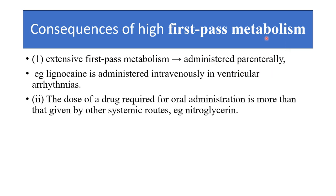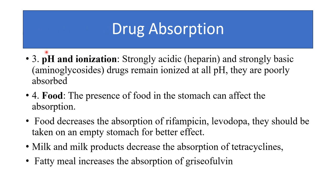Consequences of extensive first-pass metabolism: such drugs should be administered parenterally. Lignocaine is administered intravenously in ventricular arrhythmia. The dose required for oral administration is more than that given by the systemic route — for example, nitroglycerin. Regarding pH and ionization: strongly acidic drugs like heparin and strongly basic drugs like aminoglycosides remain ionized at all pH values, so they are poorly absorbed and excreted in unchanged form. These drugs should be given parenterally.